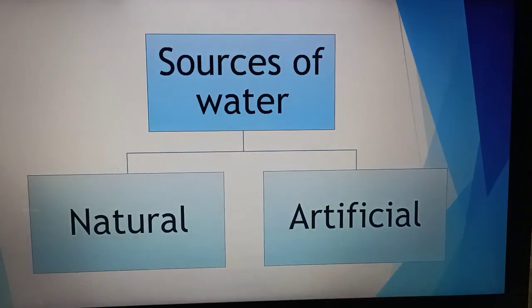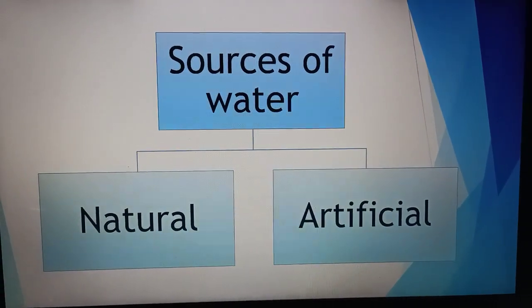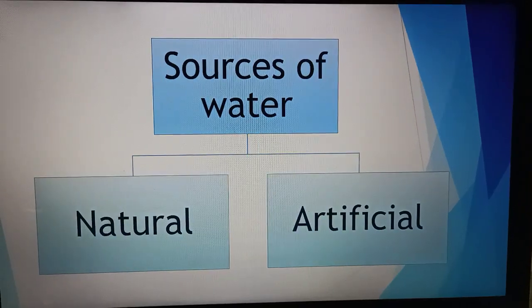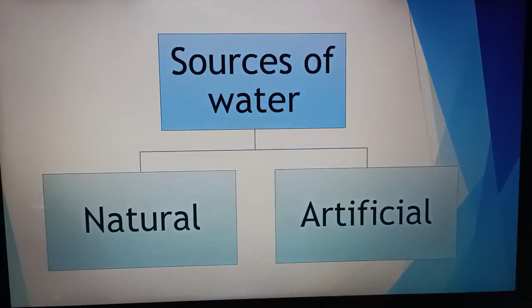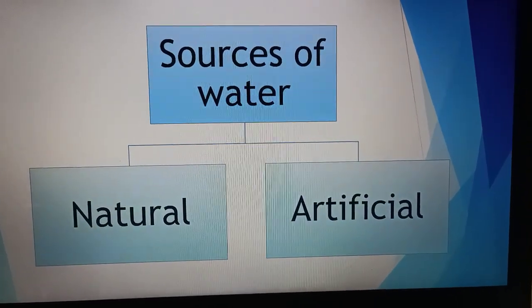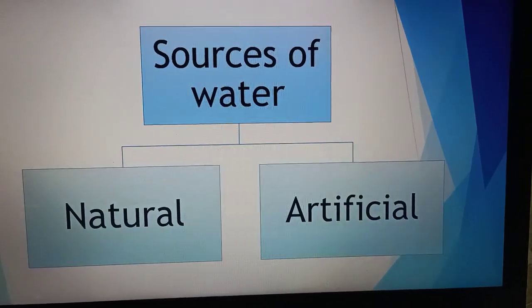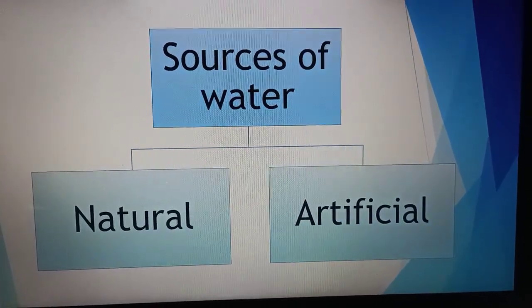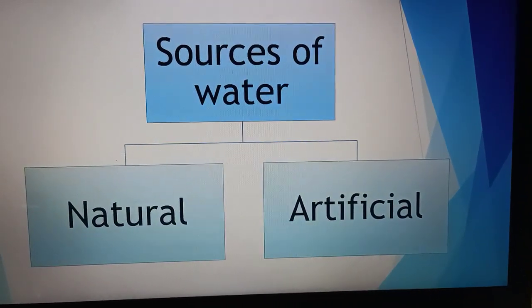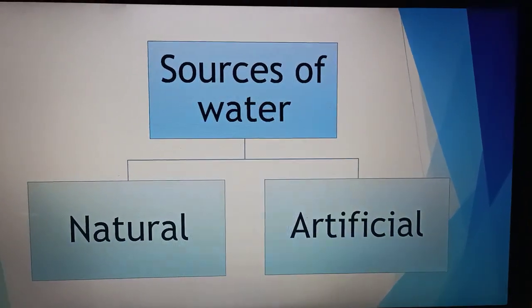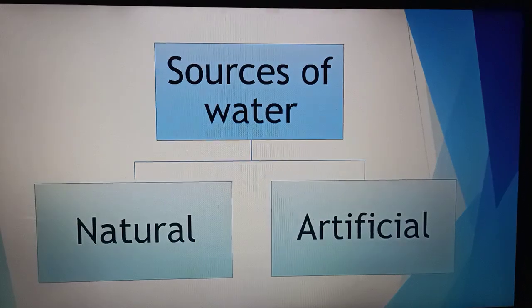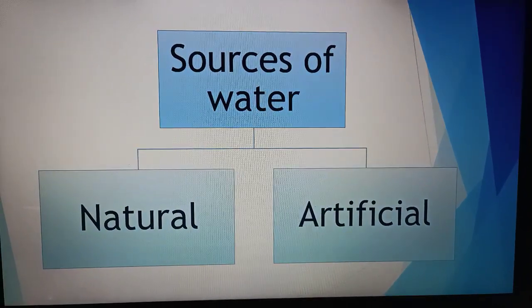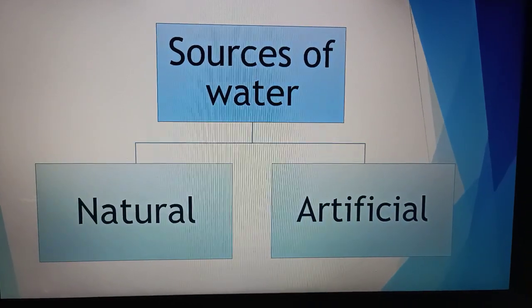All water sources are of two kinds: natural resources and artificial resources. Natural resources are those that we get from nature as they are and can be directly used without any changes. In the case of artificial sources of water, we need to make certain efforts to obtain the water and use it as per our requirement. We'll look into examples of both natural and artificial resources.